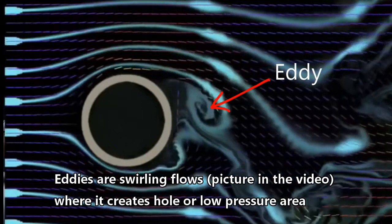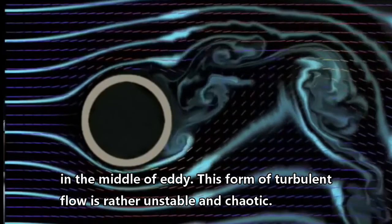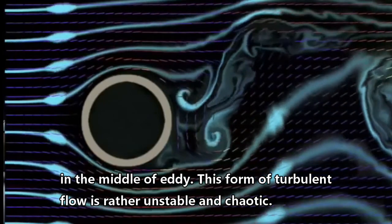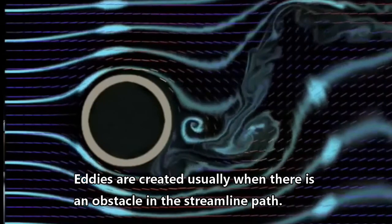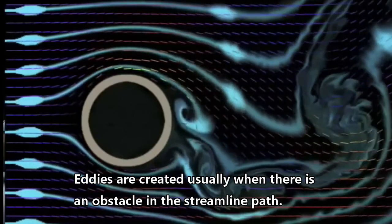Eddies are swirling flows that create a hole or low pressure area in the middle. This form of turbulent flow is rather unstable and chaotic. Eddies are created usually when there is an obstacle in the streamline path, like cylindrical bodies.